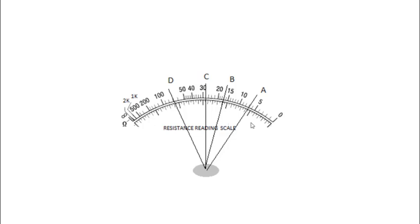Alright, we'll solve here letters A, B, C, D. These are actually representations of pointer. So we have here pointer A, pointer B, pointer C, and then pointer D. Alright, so let's have some readings.